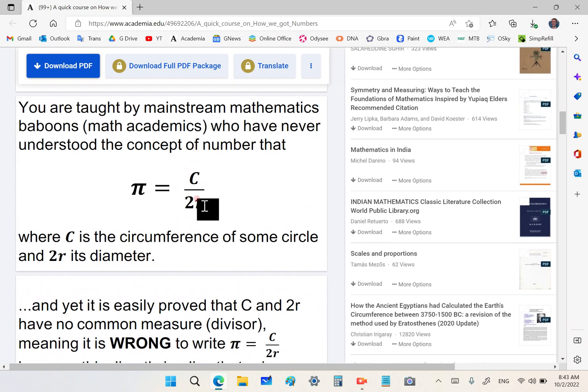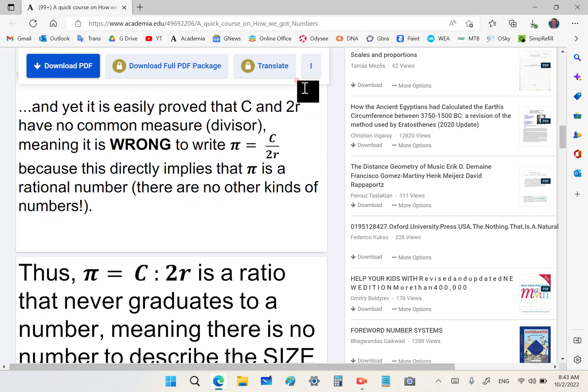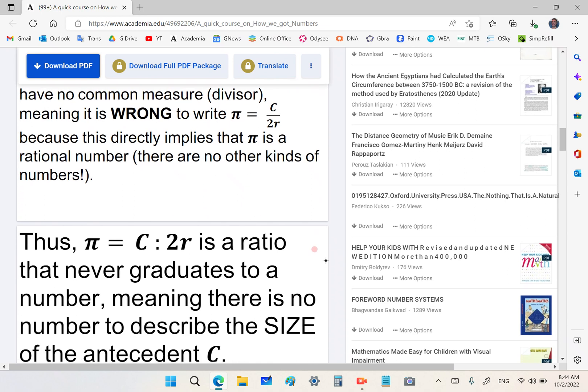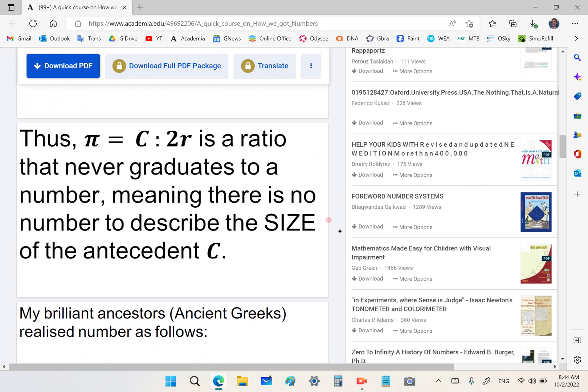This is wrong because in order to write C over 2R, both C and 2R must have a common measure. We cannot write C over 2R unless C and 2R have a common measure. When we talk about pi, it's realized from the ratio C to 2R. It's common knowledge that C and 2R don't have a common measure, and it can be proved. That's why mainstream fools call pi an irrational number. It's not a number of any kind. It's a constant that has no measure. It only has an approximation.